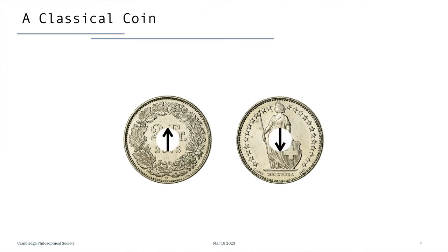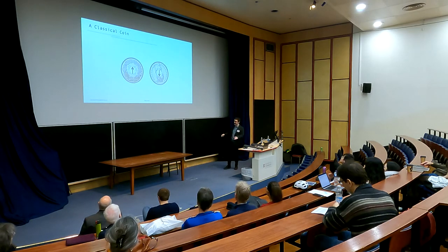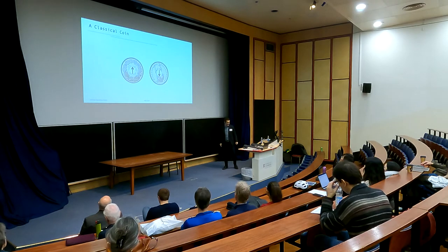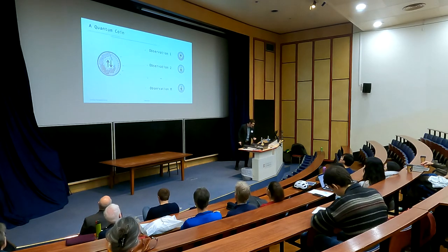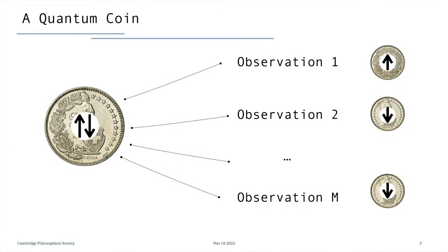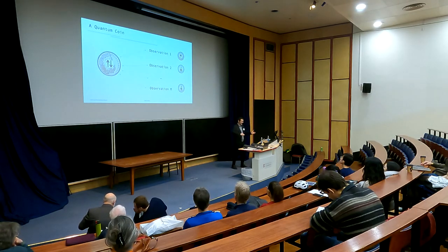I will associate two states to this classical coin: a state I will call 'up', where the coin is facing with the two-franc side up, and otherwise I will call that the 'down' state. Everything is clear with a classical coin — you can always tell whether it's up or down. Things become more interesting when you have a quantum coin. The principle of superposition means that a quantum coin can be, at the same time, in a superposition of being both up and down.